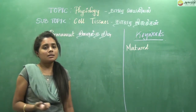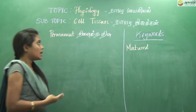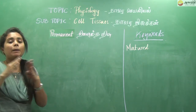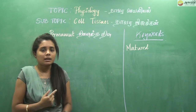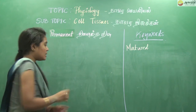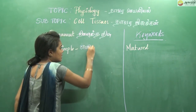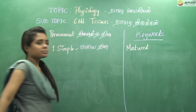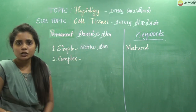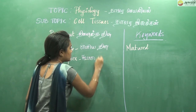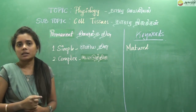Meristematic tissues produce matured, permanent tissues. These are called armature tissues — permanent tissues. There are two types: simple tissues and complex tissues. Complex tissues are the more advanced type. We will see more in the next video.